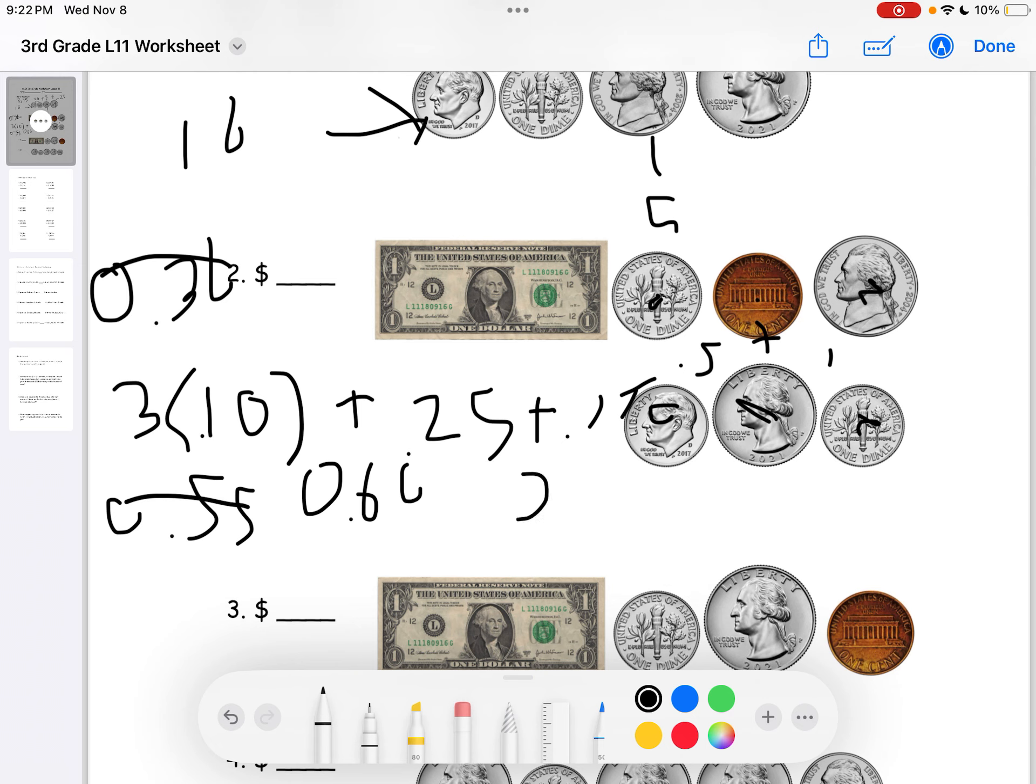And then we also have 1 quarter. So, it will be $0.75. Plus the penny, $0.76. And since we also have the one dollar here, the answer will be $1.76 for number 2.